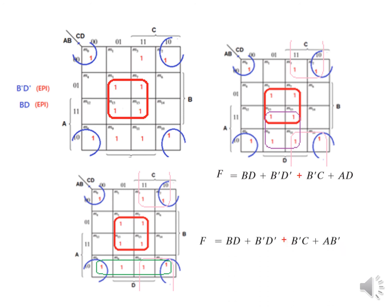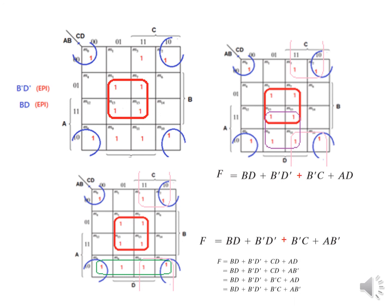So we have four options in this case to find the value of F. I hope this gives you an understanding of how to plot prime implicants and find the value of functions using essential prime implicants and prime implicants. Thank you.